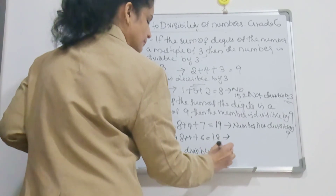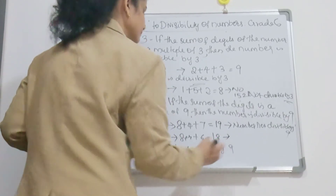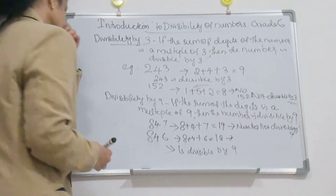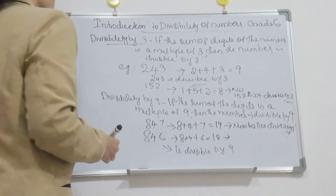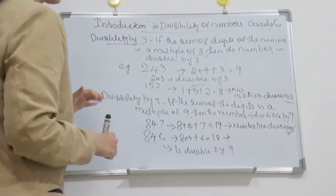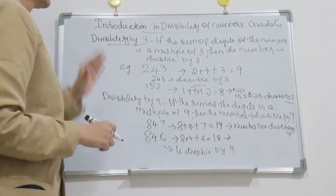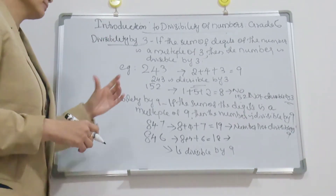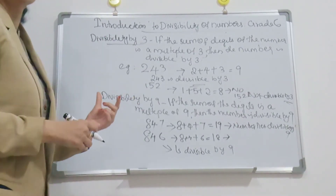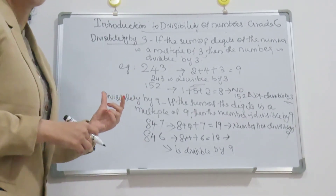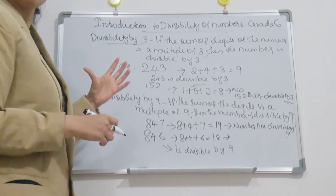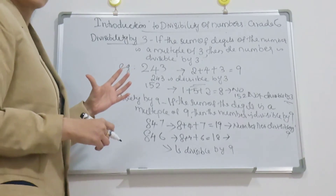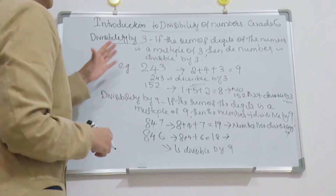How do we apply these rules? For divisibility by 3 and divisibility by 9, I follow the same rule — the rule is the same thing. That's it.